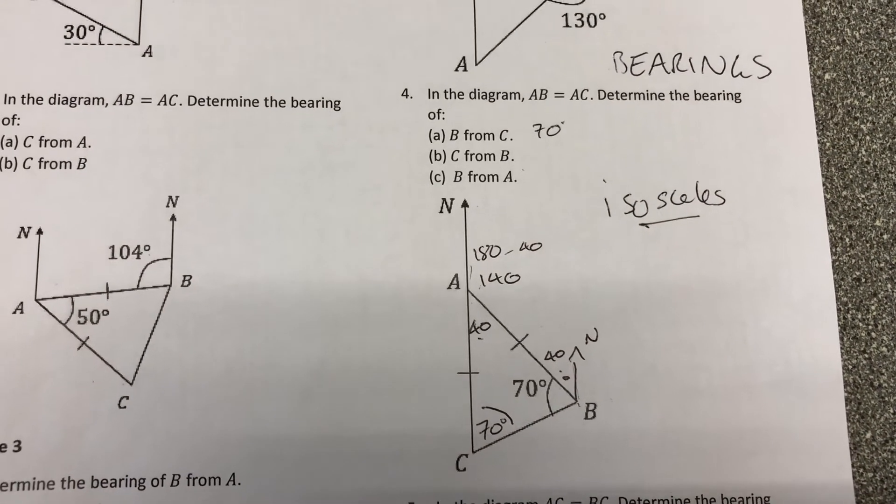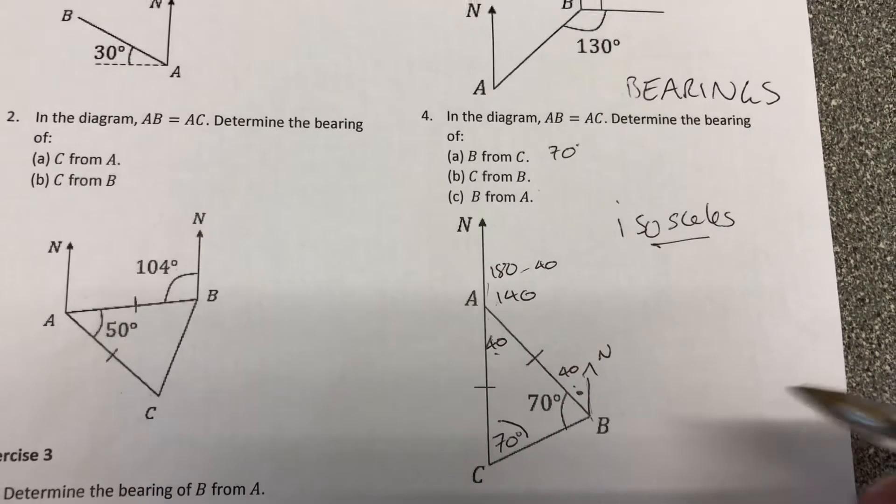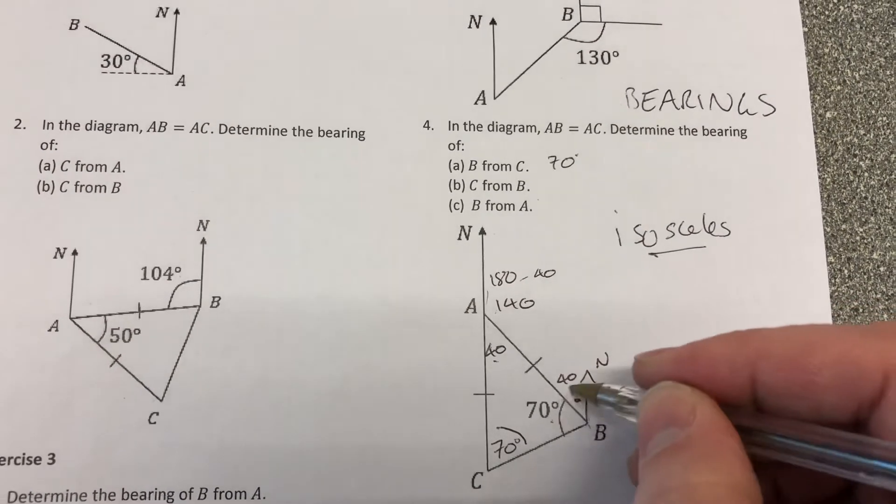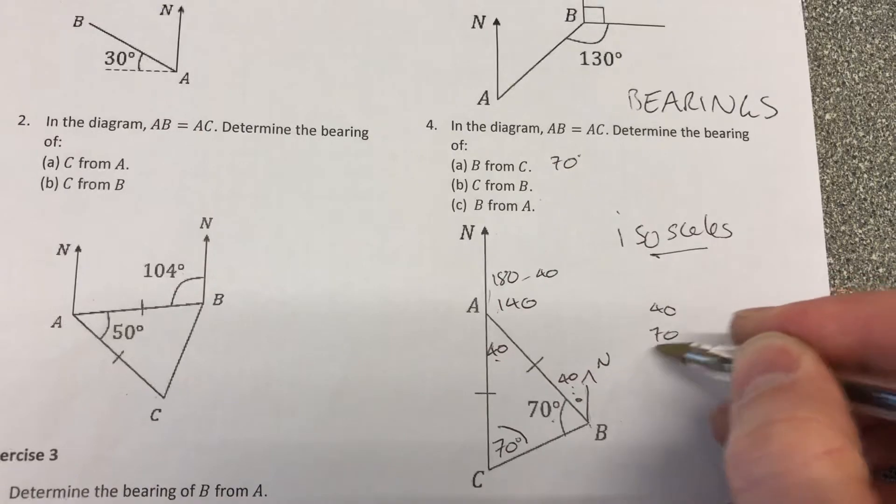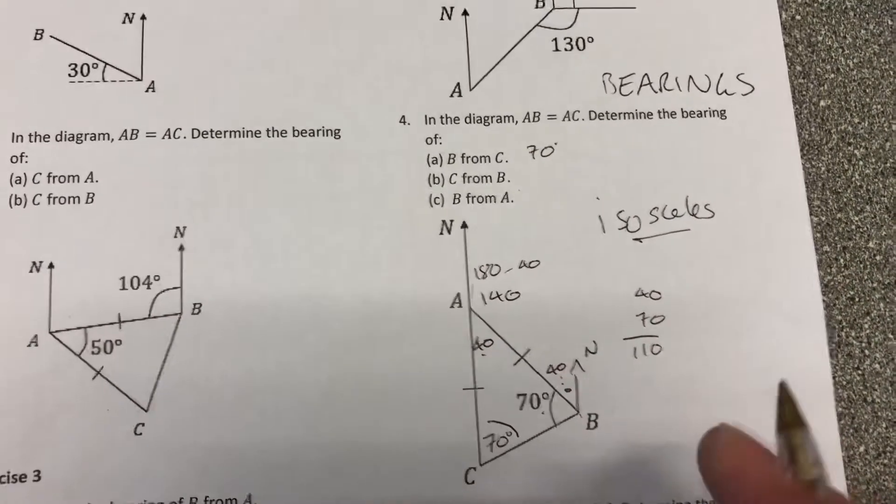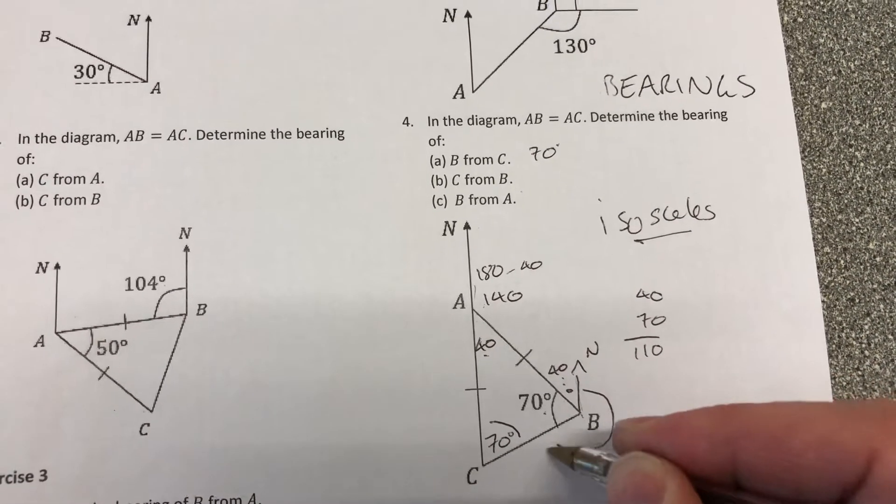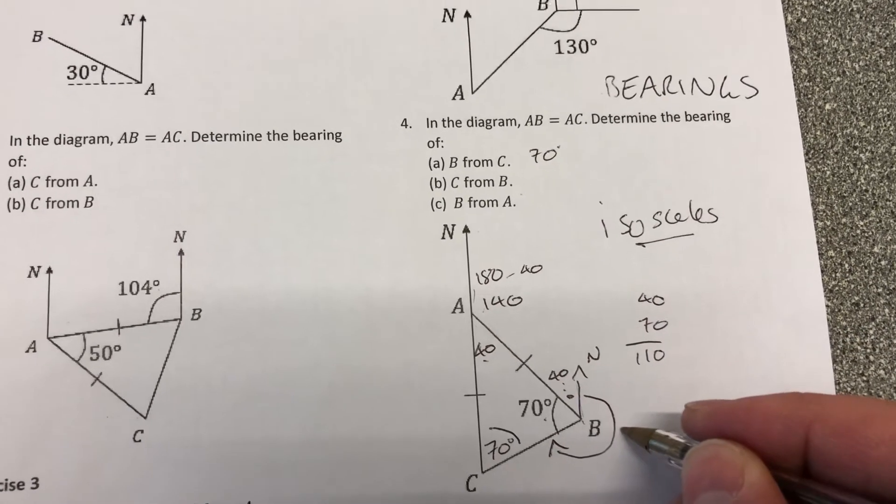And then you've got to work out the outside angle by doing 70 plus 40, giving you 110, and then 360 subtract that 110. So that's this angle here. 360 take away that 110 gives me?